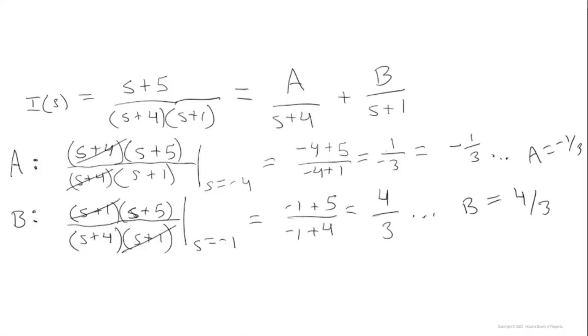We do the partial fraction decomposition in order to make it easy to do the inverse Laplace transform. We'll solve for A first by multiplying both sides by S plus 4 and plugging in S equals minus 4. This will make the B term go away and isolate the A term.